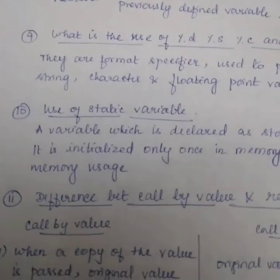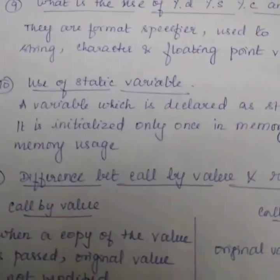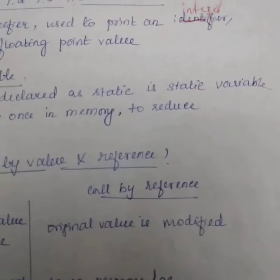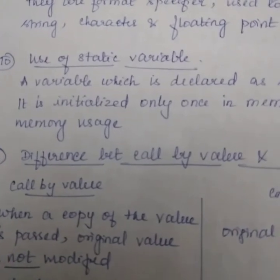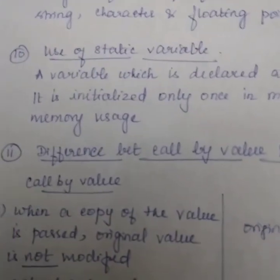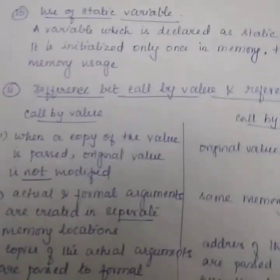Use of static variable. A variable which is declared as static is static variable. It is initialized only once in memory to reduce the memory usage. Another important difference,